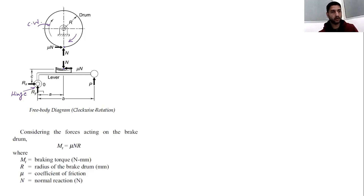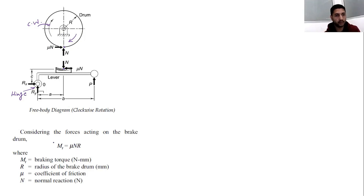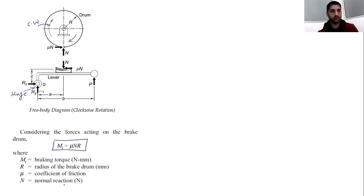The braking torque is MT = μN × r, where MT is in N·mm, r is the radius of the drum, μ is the coefficient of friction, and N is the normal force. Remember that the normal force is always perpendicular to the frictional force.